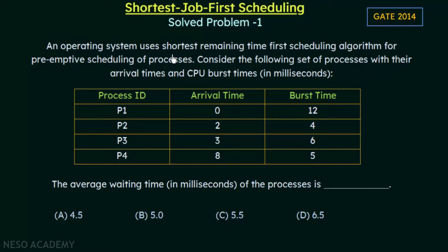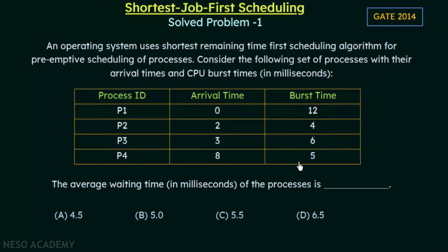Here is the problem: an operating system uses the shortest remaining time first scheduling algorithm for preemptive scheduling of processes. Consider the following set of processes with their arrival times and burst times in milliseconds. Shortest remaining time first is another name for the shortest job first scheduling algorithm, using a preemptive type of scheduling.